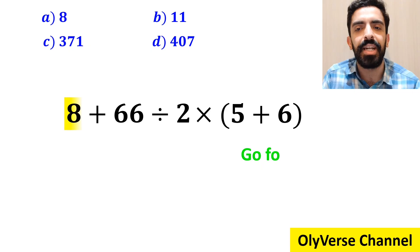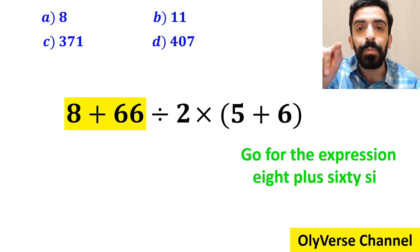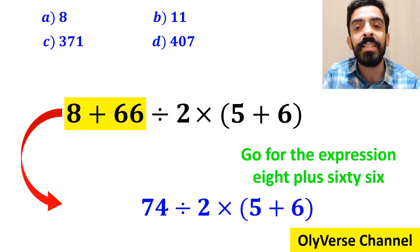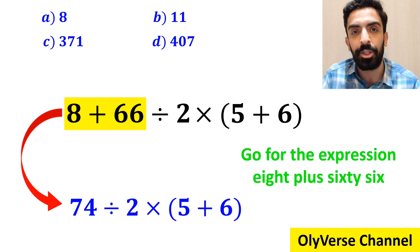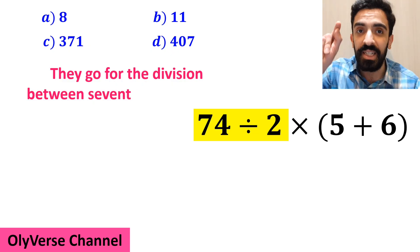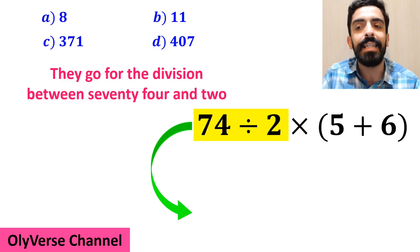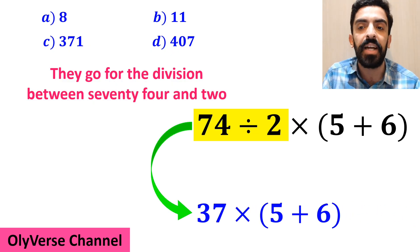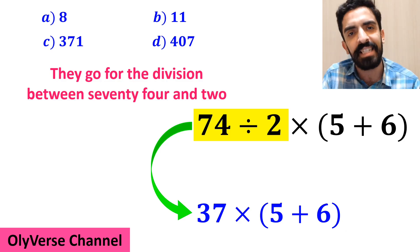Many people when solving this question first go for the expression 8 plus 66 and write this expression as 74 divided by 2 times 5 plus 6 inside the parenthesis. And the next step they go for the division between 74 and 2 and this expression simplified to 37 multiplied by 5 plus 6 inside the parenthesis.